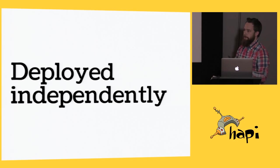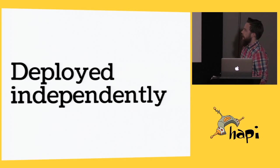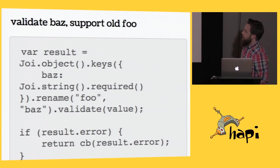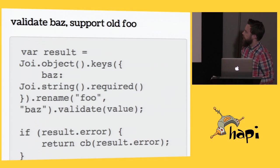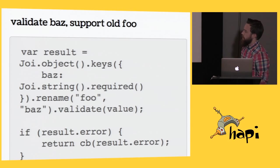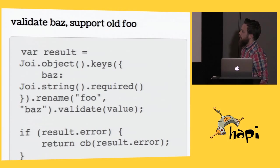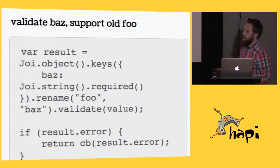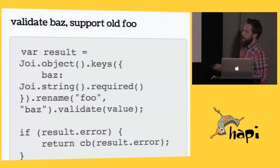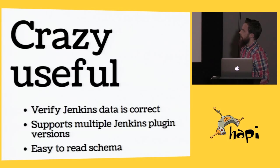If this is the case, we wind up being able to use Joy to do this — again, a very simple example but very powerful in a large system. We could just support both and still have our new configuration, and we just wind up chaining a lot of these together as necessary and then killing this off. By having continuous deployment, we don't have to have this rename in there forever — we could just get rid of it after a short period of time.